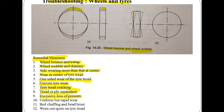The ninth is excessive loss of pressure. A pressure loss of 35 kPa in a week is considered excessive. It may be caused by a faulty valve or leaking patch, and for that we have to repair or replace the punctured tube. The tenth is uniform but rapid wear — caution the driver against high speed and avoid driving on rough roads. The eleventh is bad chaffing and bad bust. If overloading, avoid it. If tire pressure is low, inflate to correct pressure. If wheels are damaged, replace them. If there is insufficient twin tire clearance, check and keep adequate clearance.